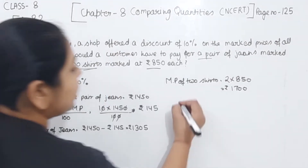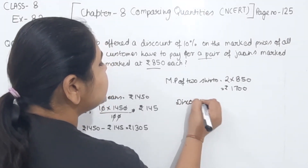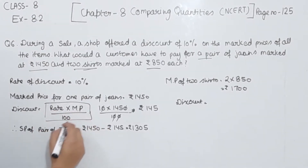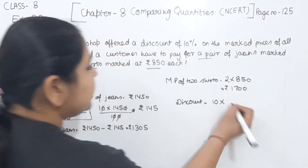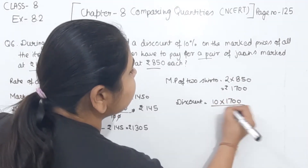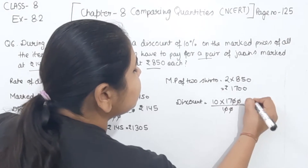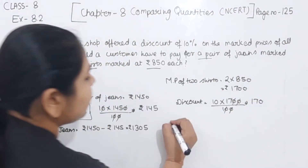Now we find the discount for the shirts using the same formula: Discount = (Rate × Marked Price) / 100 = (10 × 1700) / 100. The zeros cancel, giving a discount of ₹170.